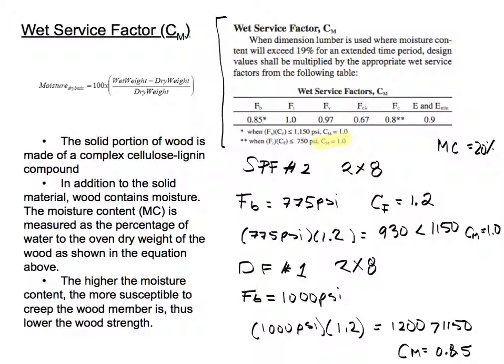For this example, we have two wooden members. One of them is a spruce pine fir number two 2x8 with moisture content of 20%. The Douglas fir, the next member, Douglas fir number one, also 2x8 member, with moisture content of 20%.